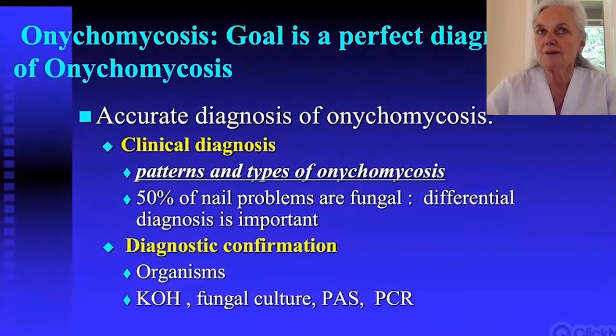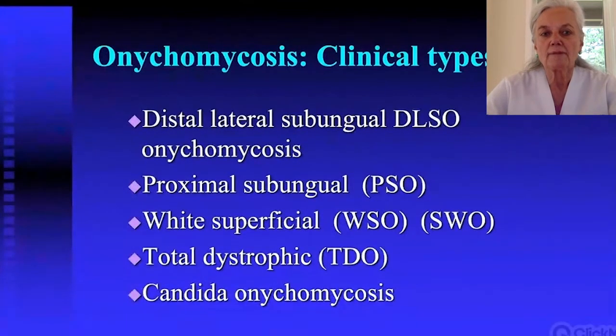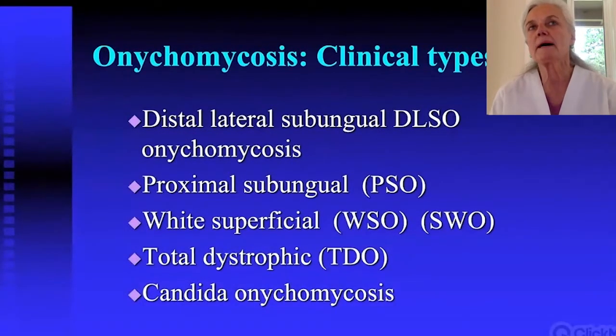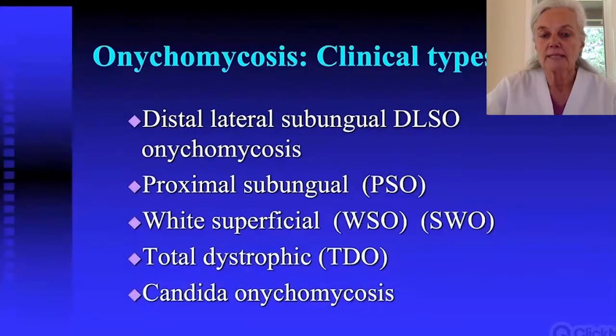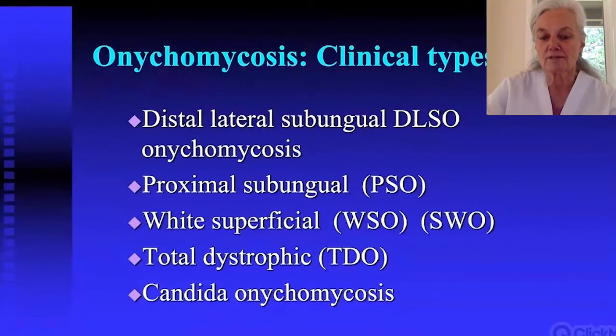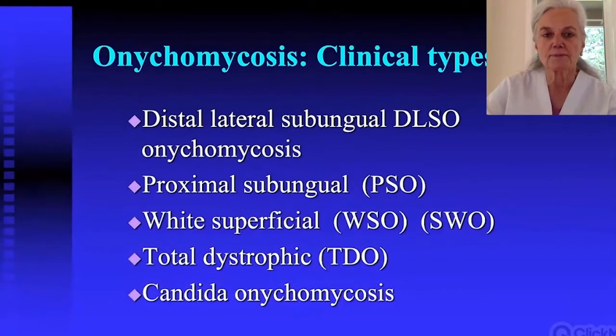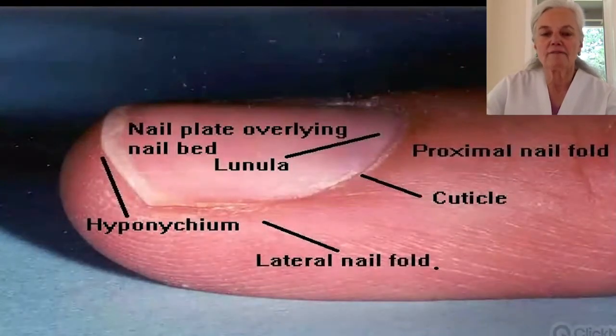There are five types of onychomycosis. Distal lateral subungual onychomycosis makes up about 90 percent of what we see — this is garden-variety toenail fungus. Proximal subungual onychomycosis is much less common and important to recognize because you need to know where to take the specimen. White superficial affects the surface and is one of the few subtypes treatable topically. Total dystrophic involves the entire nail, and candida onychomycosis is a mixed picture we'll cover separately.